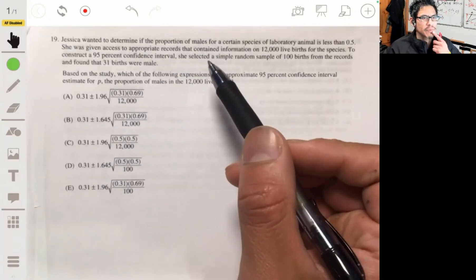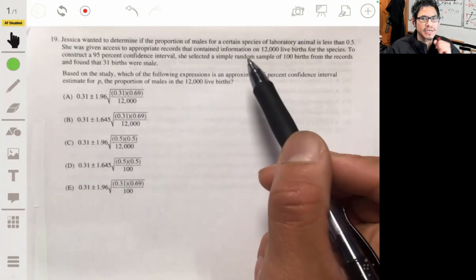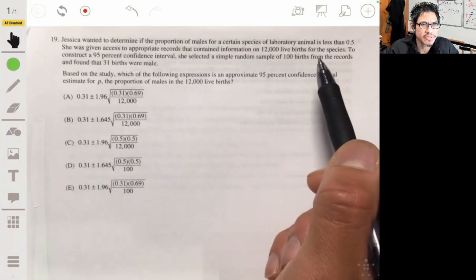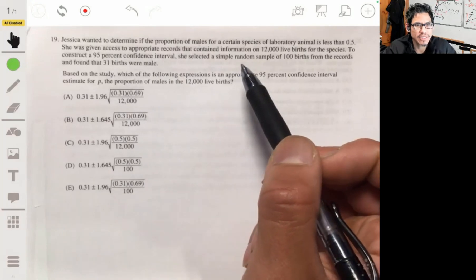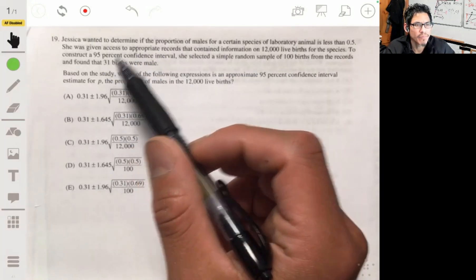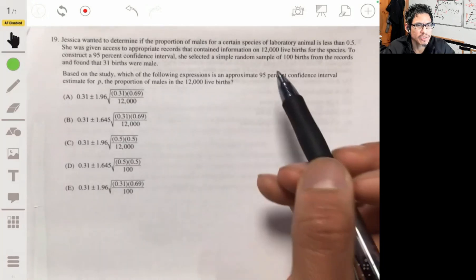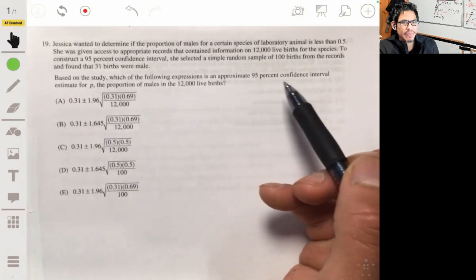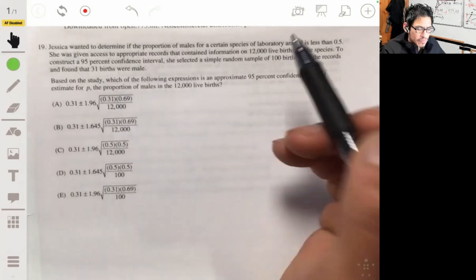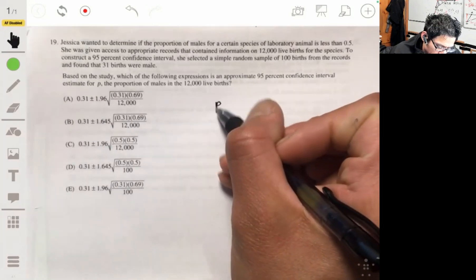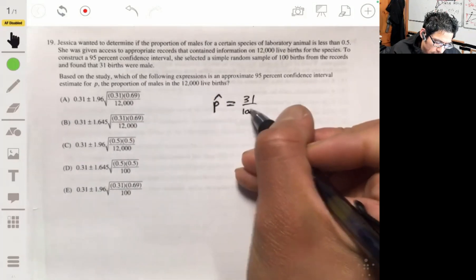Okay, so picking up on problem 19. Jessica here wants to determine if the proportion of males for a certain species of laboratory animal is less than 0.5. She was given access to appropriate records that contain information on 12,000 live births for the species. She's going to construct a 95% confidence interval. She selected a simple random sample of 100 births from the records and found that 31 of those births were male. So since we're talking about P or P-hat, our sample proportion is 31 out of 100, which is going to be 0.31.